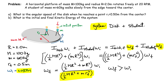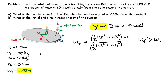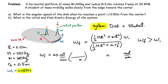First, let's convert the initial angular speed from 20 rotations per minute to radians per second. Multiplying by 2π radians per rotation and dividing by 60 seconds per minute gives an initial angular frequency of approximately 2.094 radians per second.